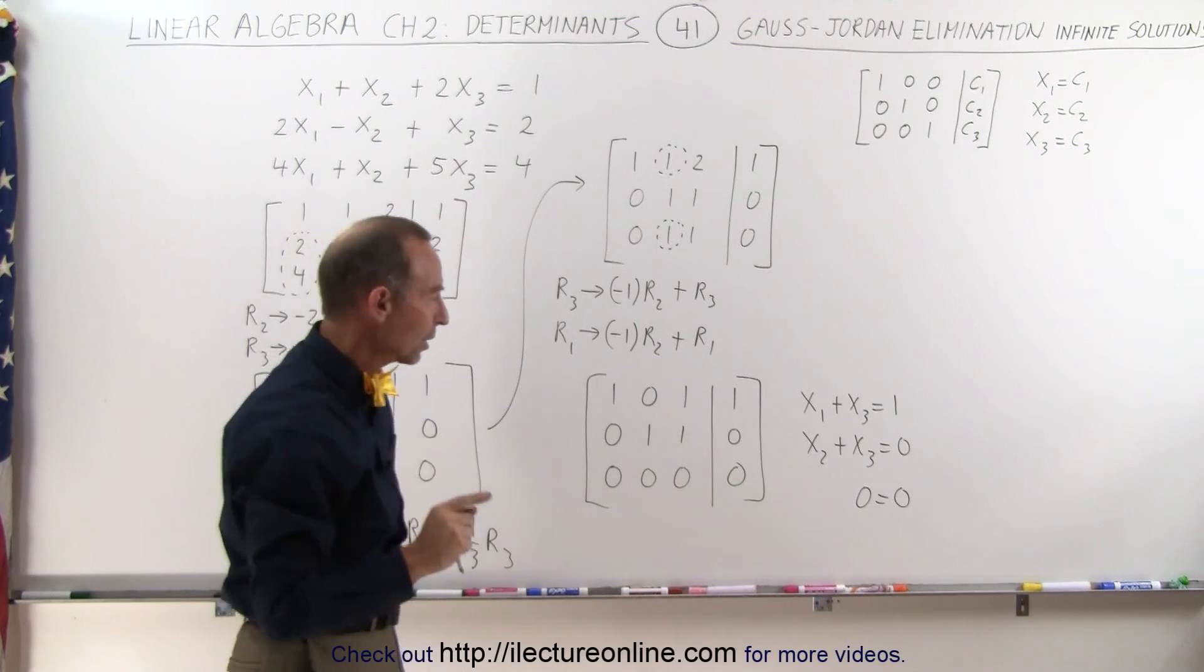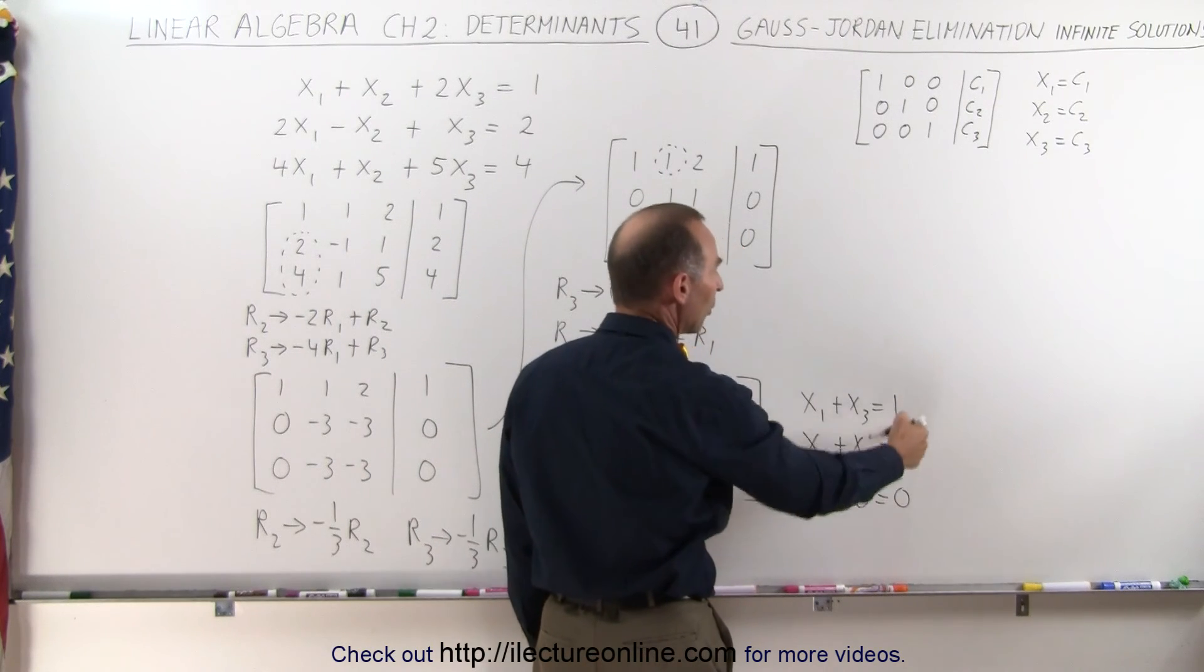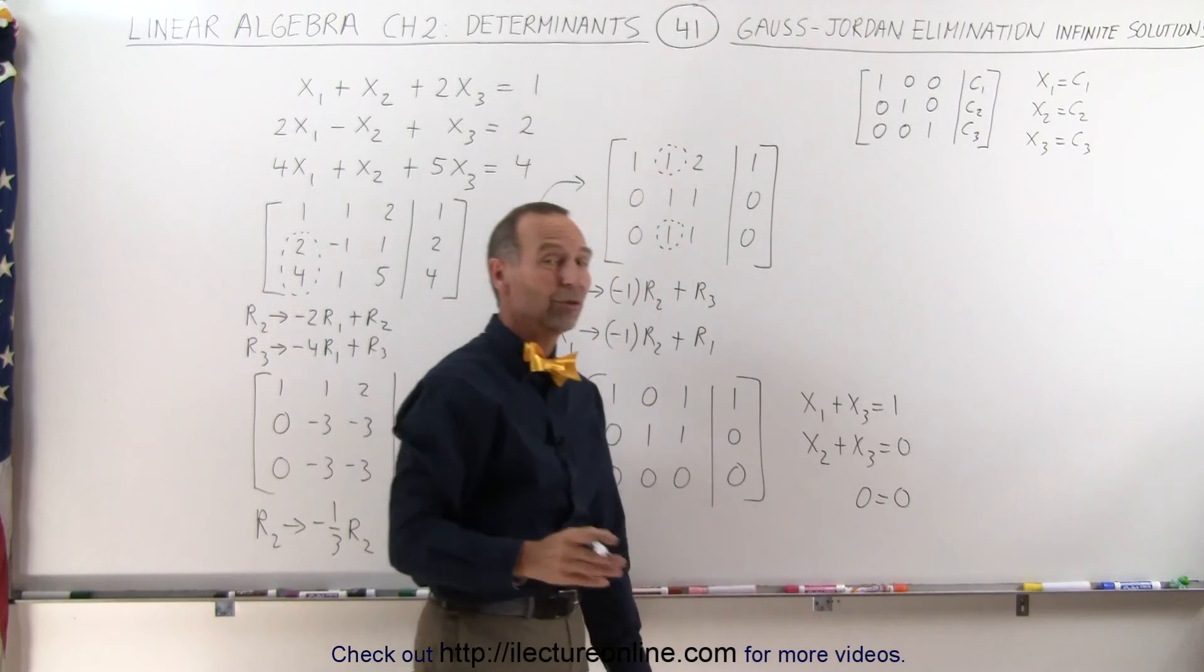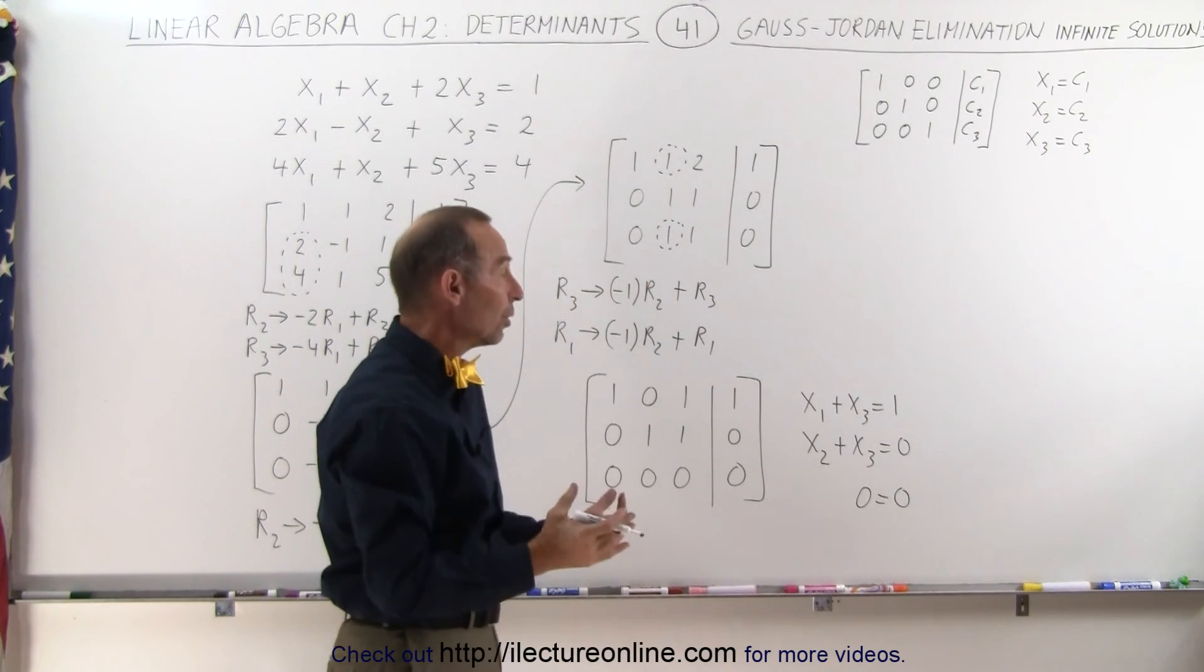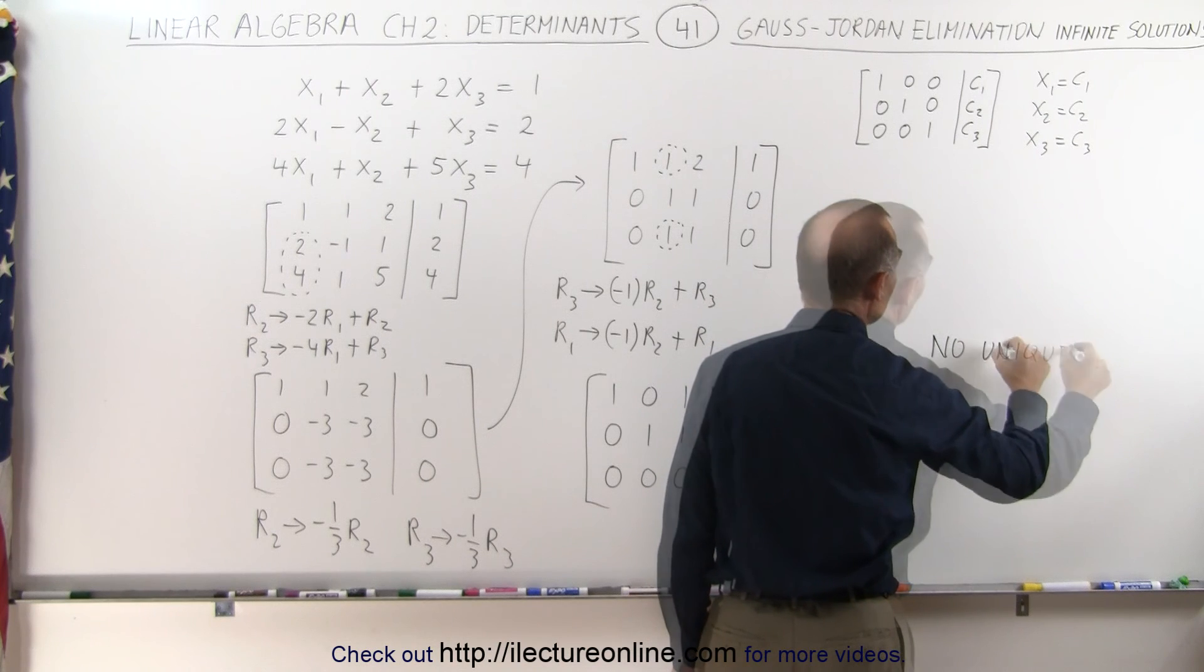Notice we still have three unknowns, x1, x2, and x3, with only two equations. Two equations, three unknowns, we can then conclude that there is no unique solution.